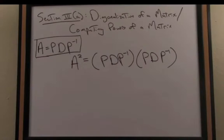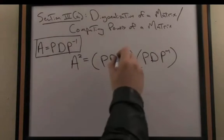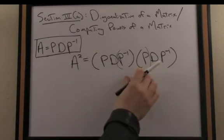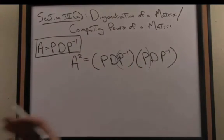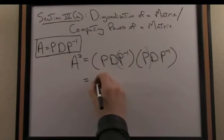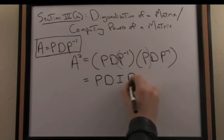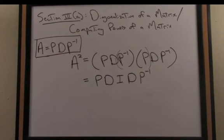Now by properties of matrix multiplication, I can reassociate the middle multiplication of those matrices and apply that multiplication first. So P inverse times P is the identity matrix. This results in PD, the identity, times DP inverse. However, the identity times any matrix is itself.